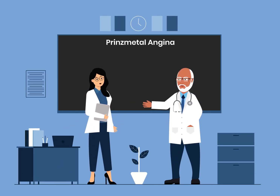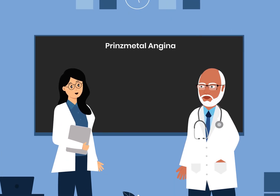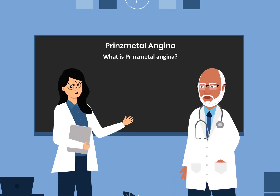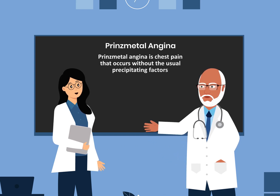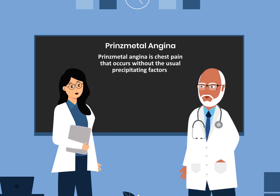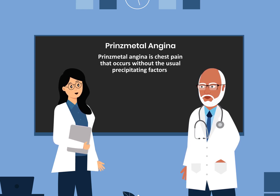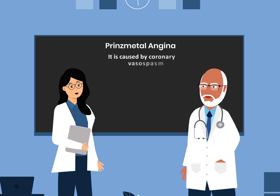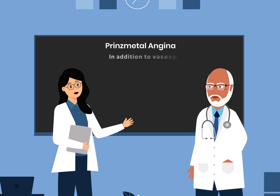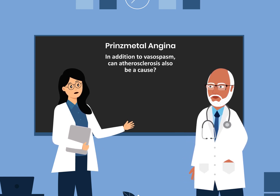Today we will be talking about Prinzmetal angina. Prinzmetal angina is chest pain that occurs without the usual precipitating factors. It is caused by coronary spasm.